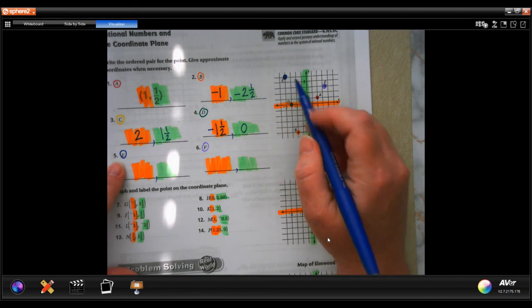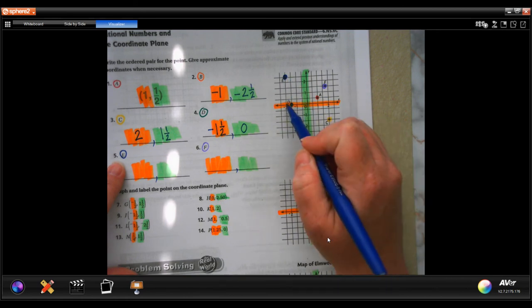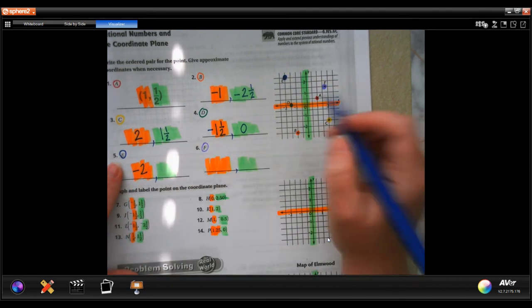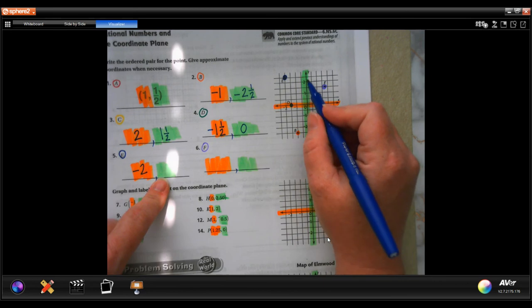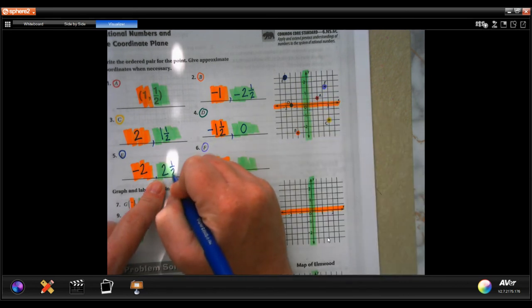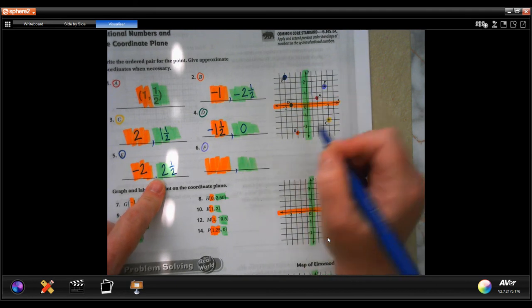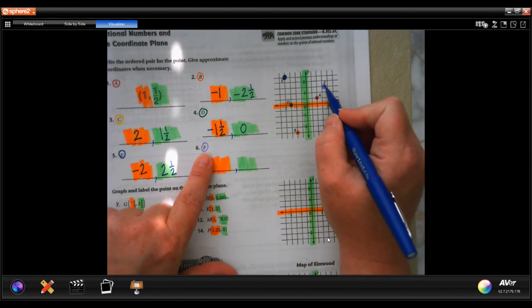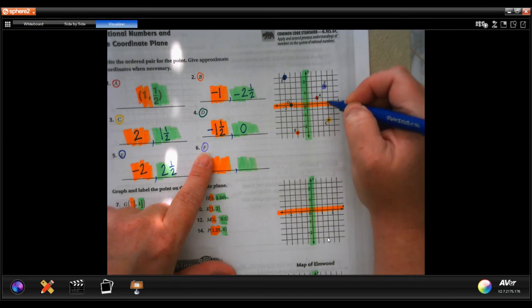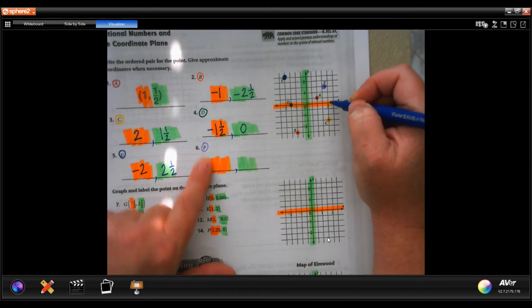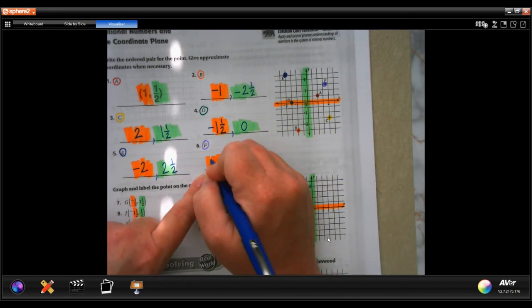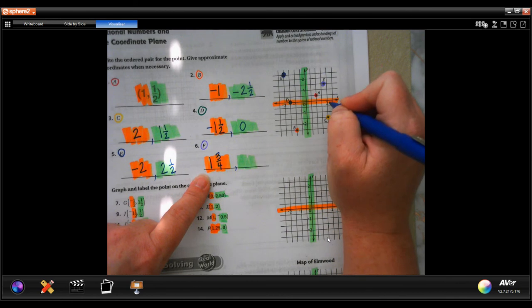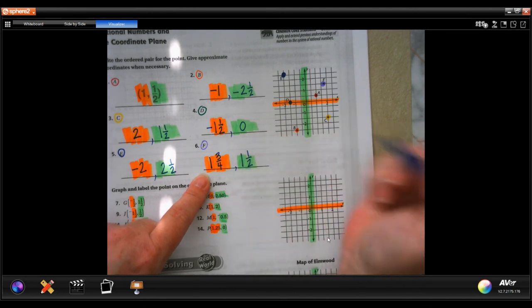E is up here. So our first number is the orange number. That goes all the way over to negative two, but it goes up to two and a half, positive two and a half, going up. All right, last one guys, F. F goes over. Oh, it's in between two of those. It's in between a half and two, or one and a half and two. So let's say one and three quarters for orange, and then up it went to one and a half. They were trying to trick you there.